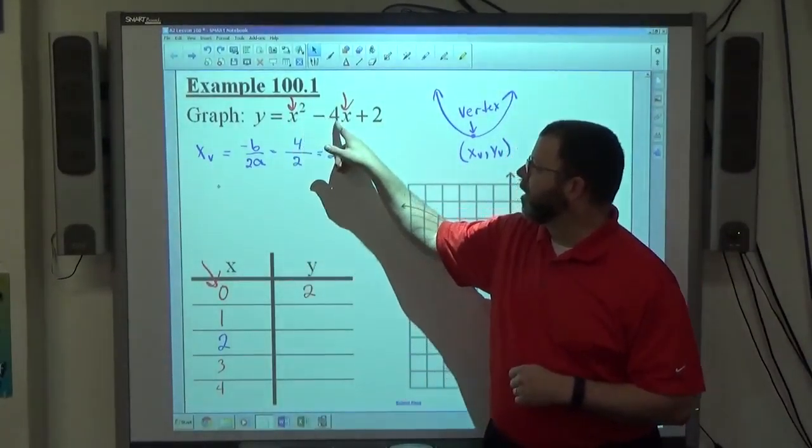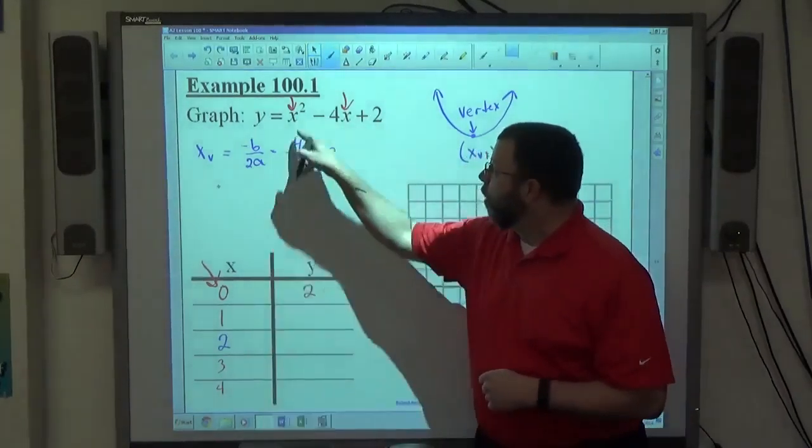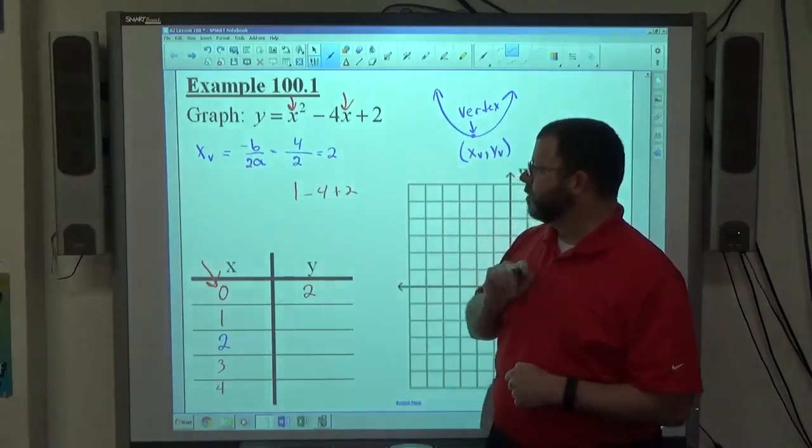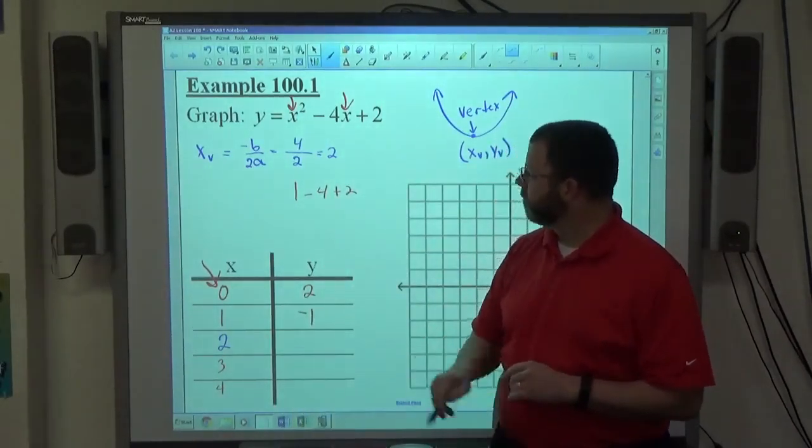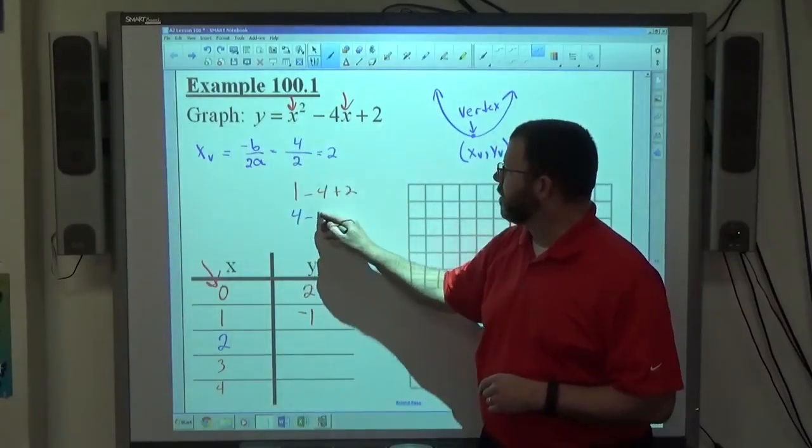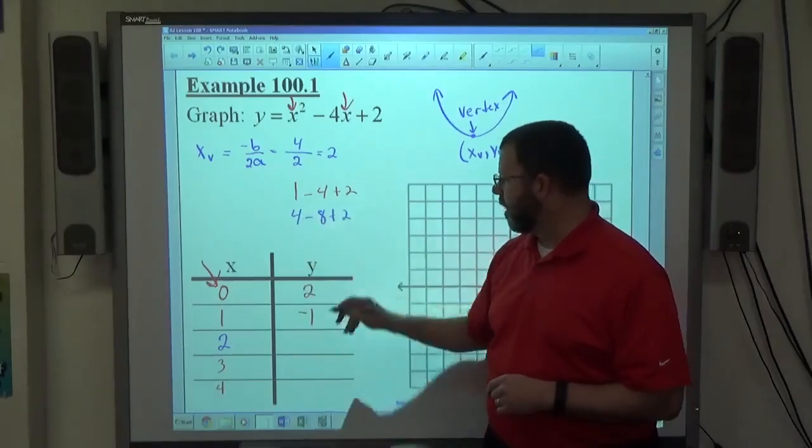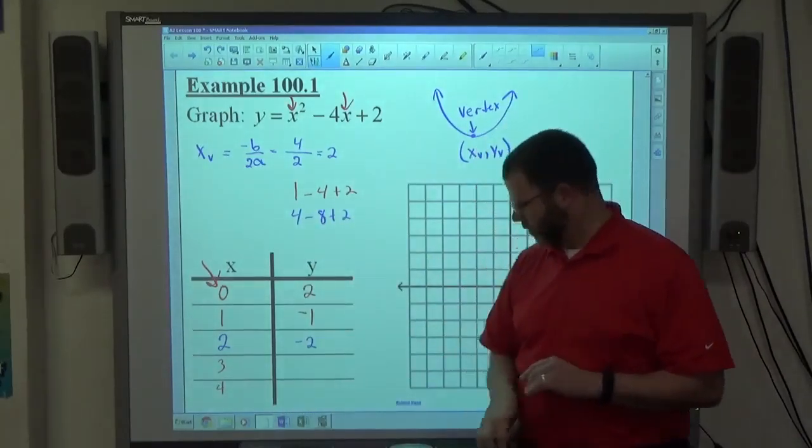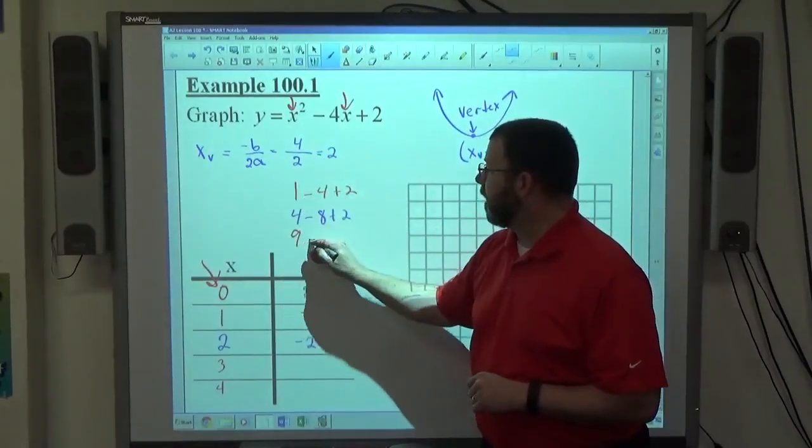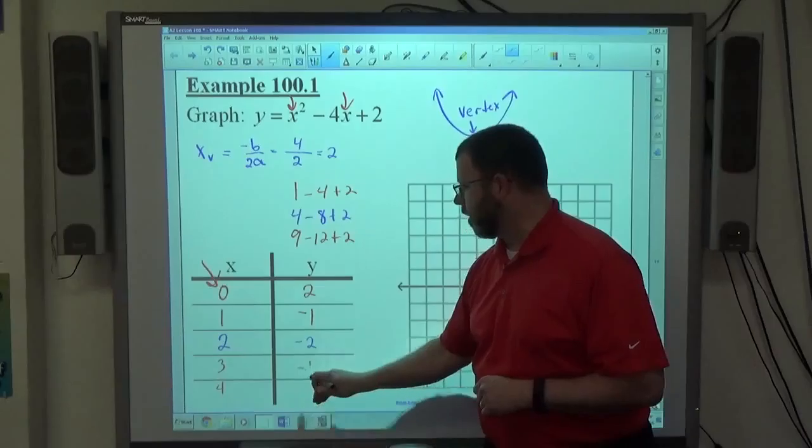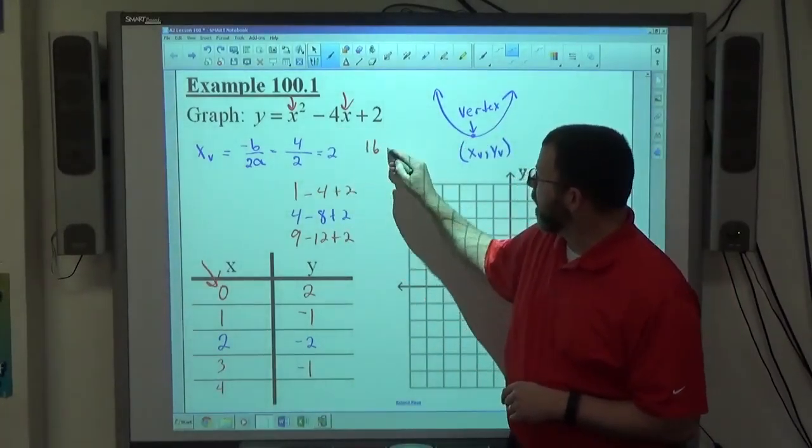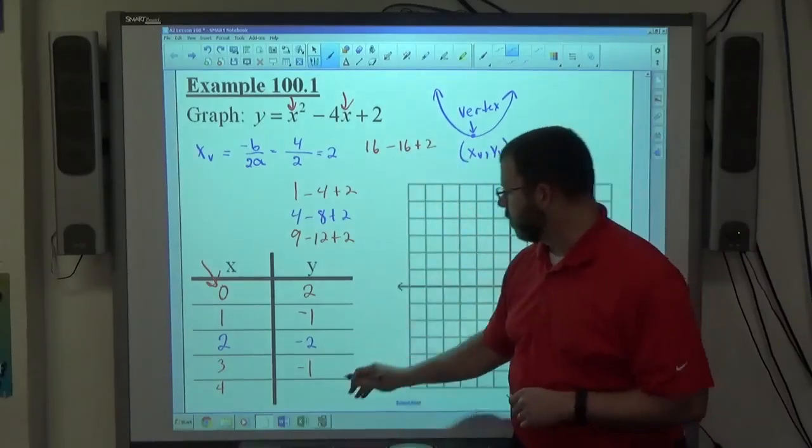0 squared is 0. 4 times 0 is 0. Plus 2 makes 2. 1 squared is 1. Minus 4 times 1 is minus 4. Plus 2 makes negative 1. 2 squared is 4. Negative 4 times 2 is negative 8. Plus 2. 6 minus 8 is negative 2. 3 squared is 9. 4 times 3 is minus 12. Plus 2. 11 minus 12 is negative 1. 4 squared is 16. Minus 4 times 4 is 16. Plus 2. 0 plus 2 is 2.